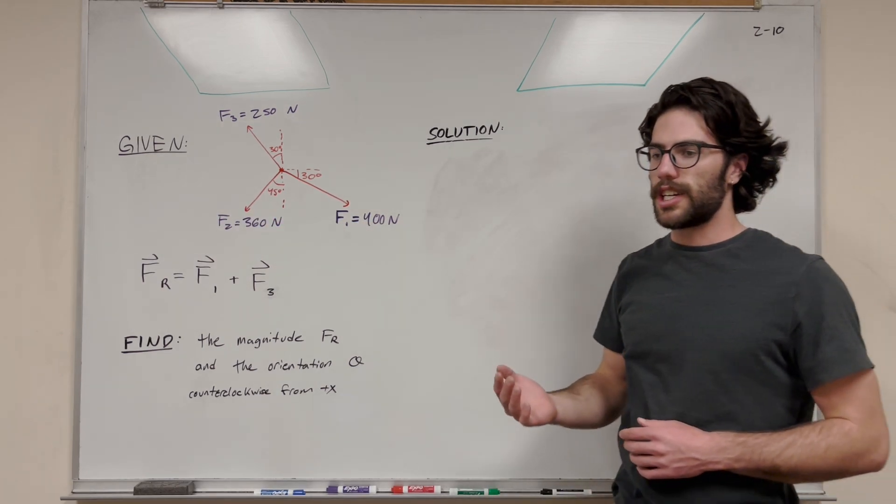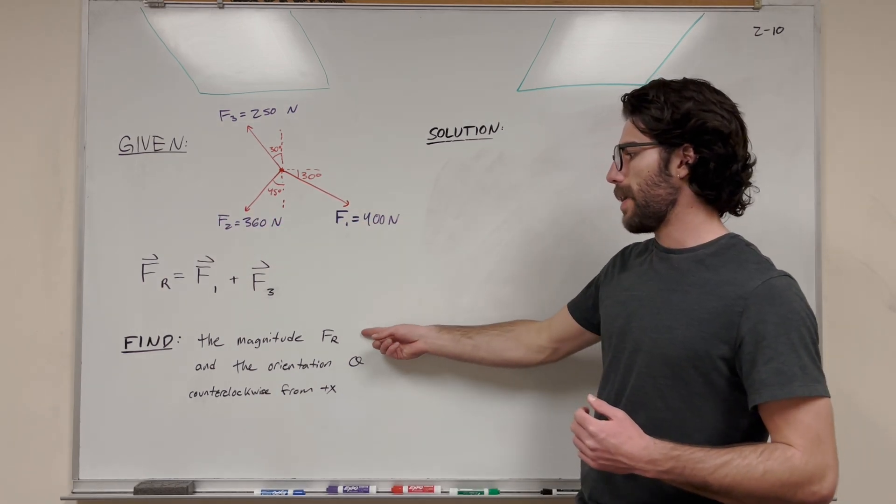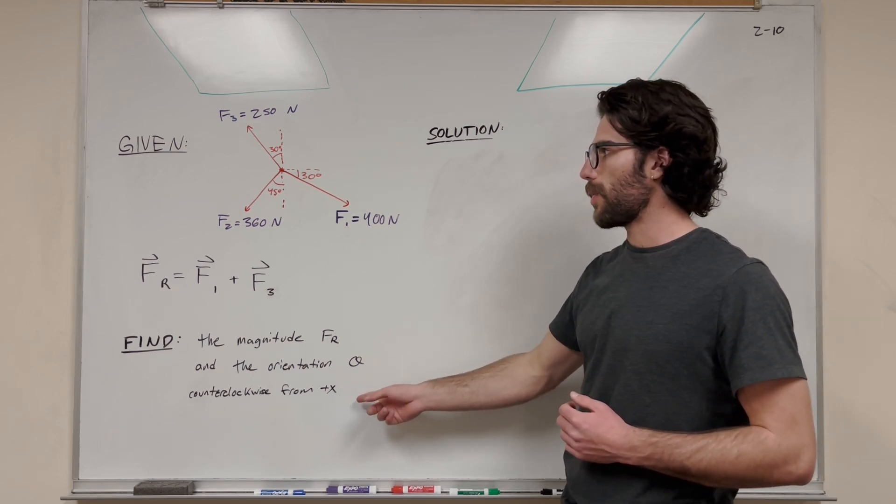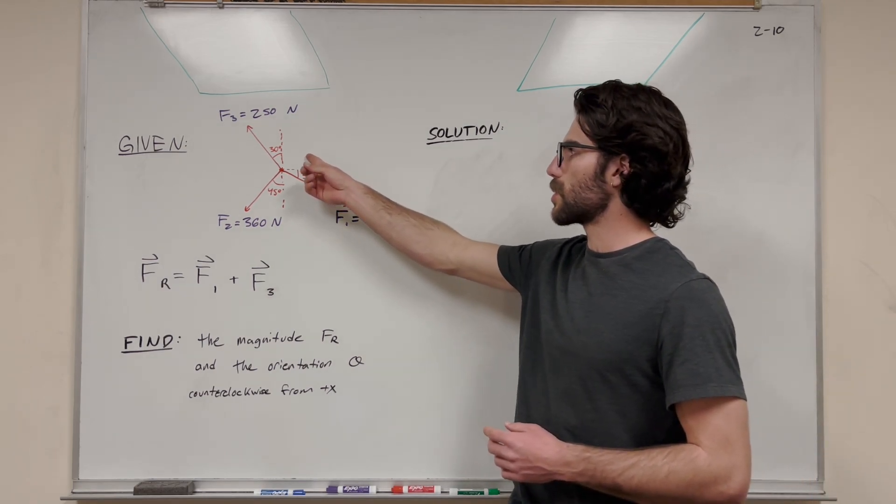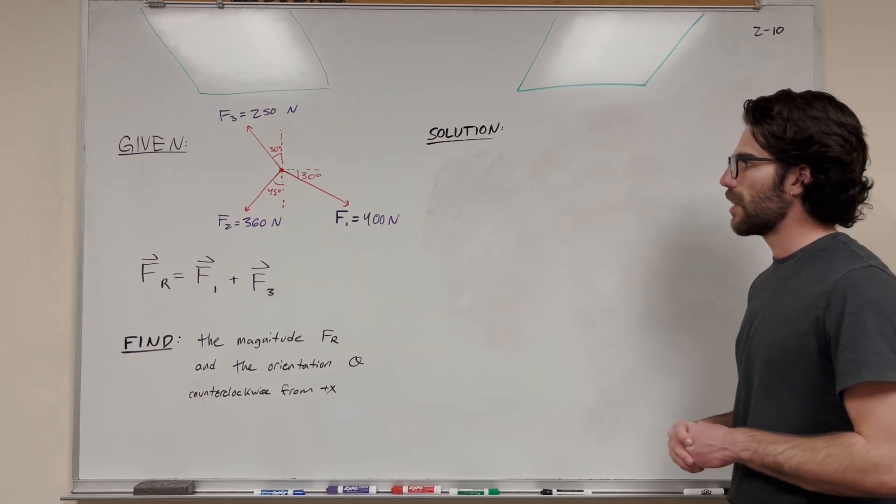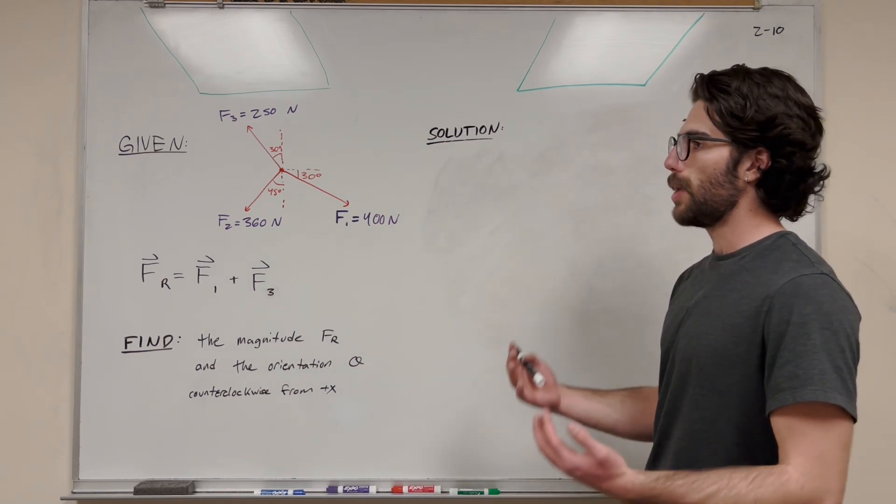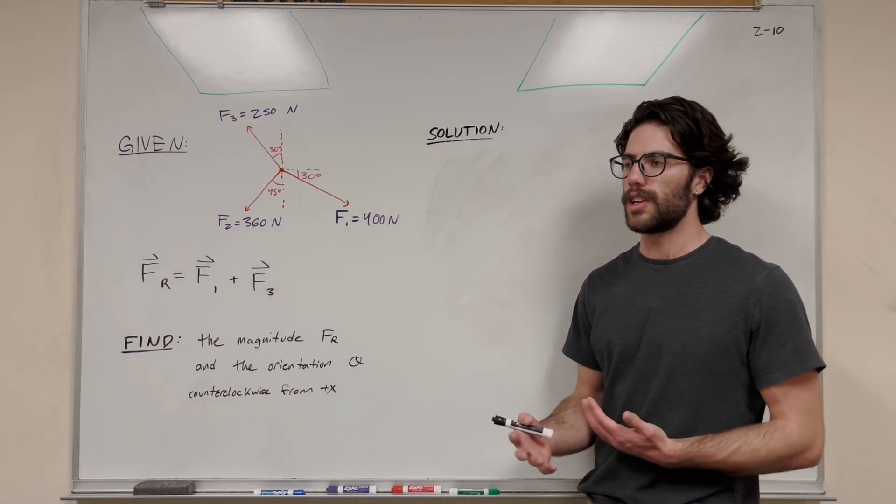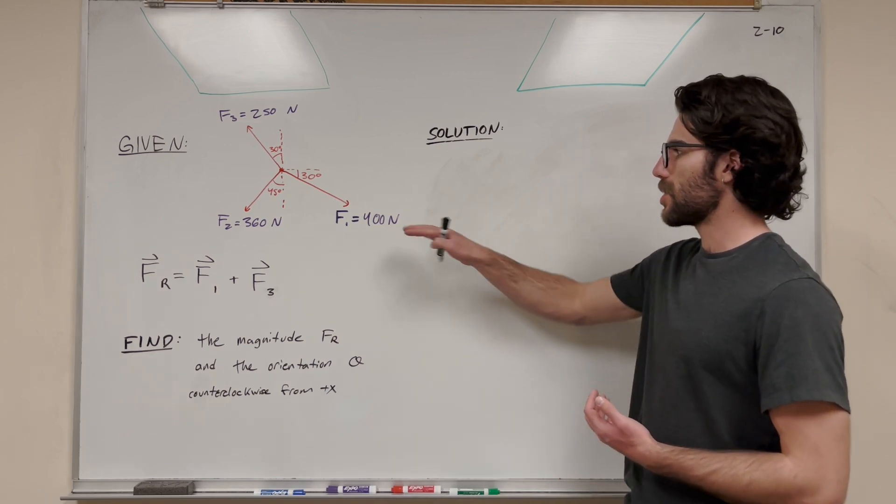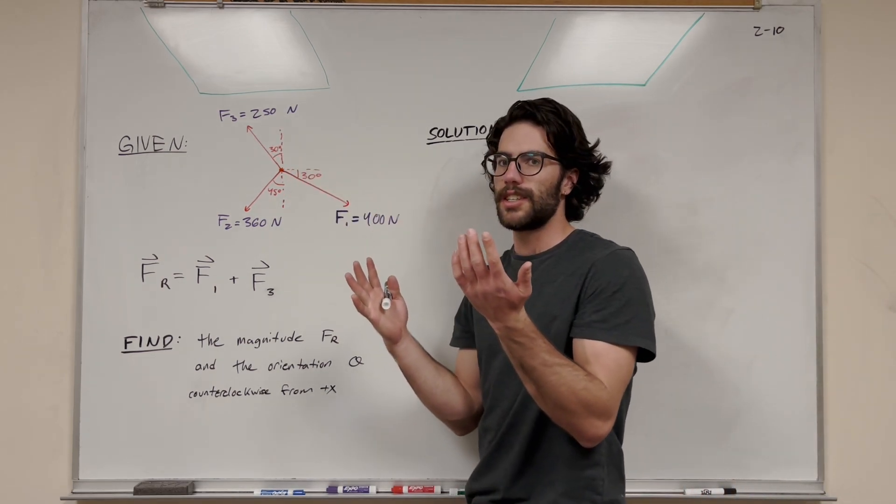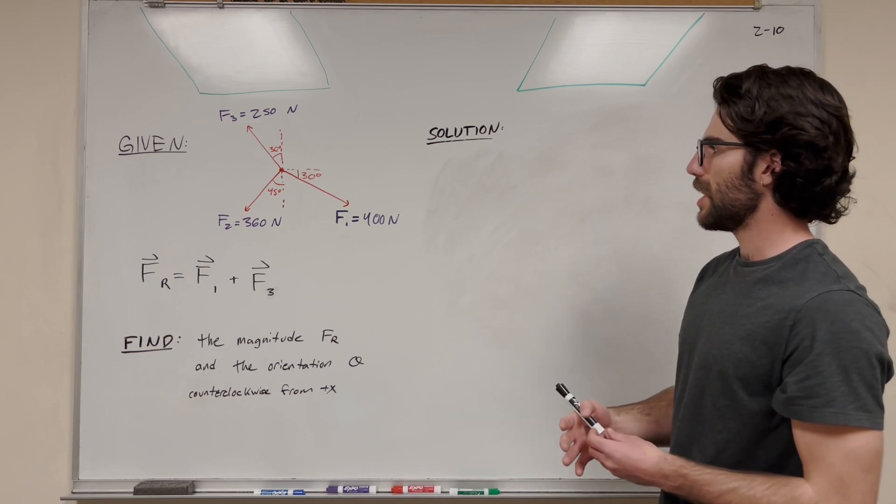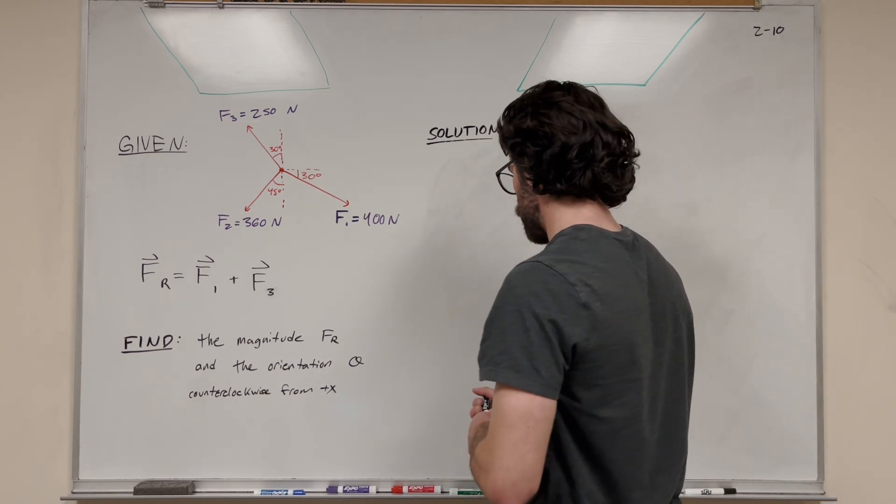We're going to find the magnitude and direction counterclockwise from the positive x-axis. For vector addition, we need to break these vectors down into their components first. That's always the first step when adding vectors - you can't just add 400 to 250 because they're pulling in opposite directions. We're going to break it down to x and y components.